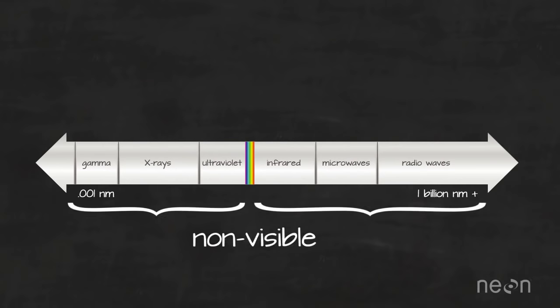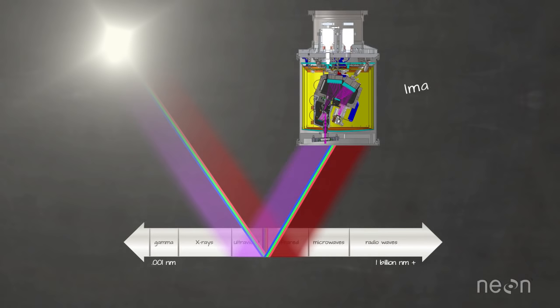The rest of the spectrum is not visible to human eyes, but can be detected and recorded by sophisticated camera-like sensors called imaging spectrometers.